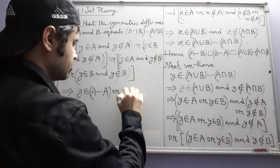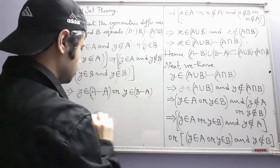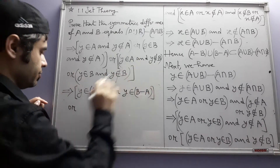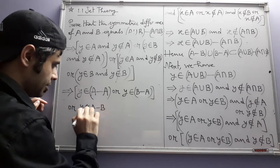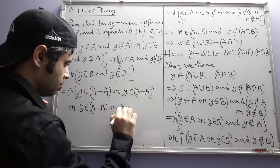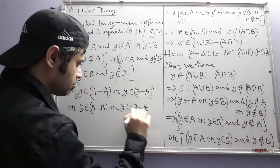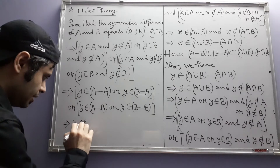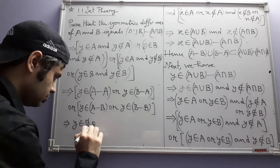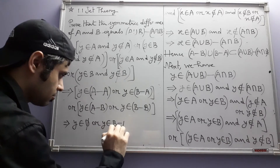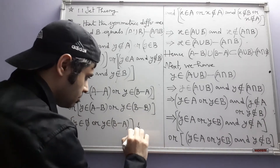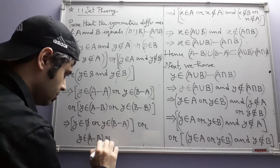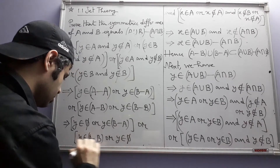Y belongs to B and Y does not belong to A, so that means Y belongs to B minus A. Or this implies Y belongs to A minus B. Or Y belongs to B minus B. Y belongs to A minus B — so now we have the empty set.